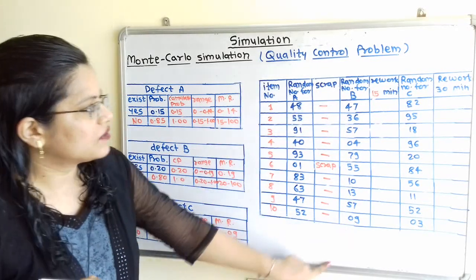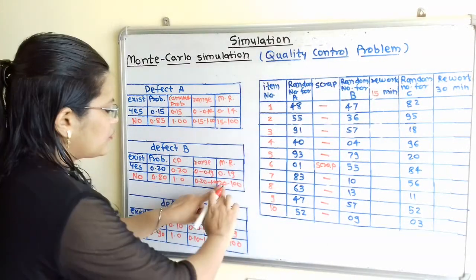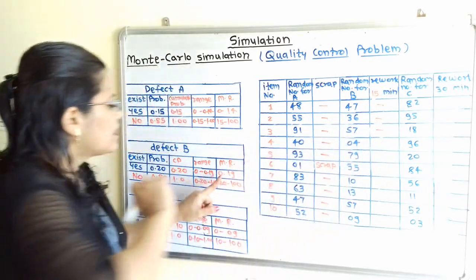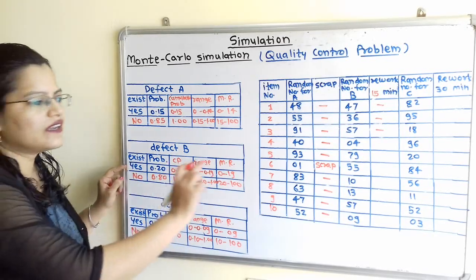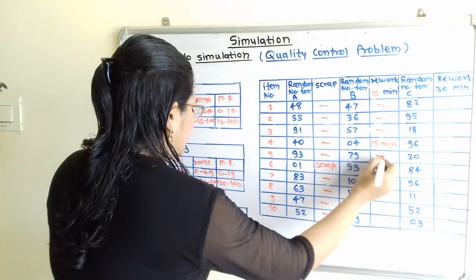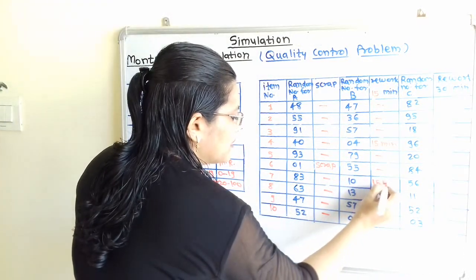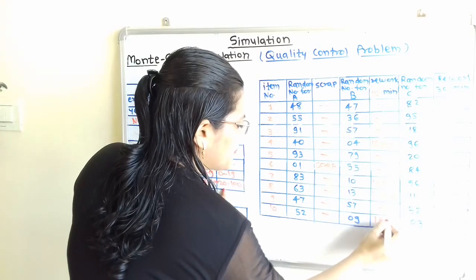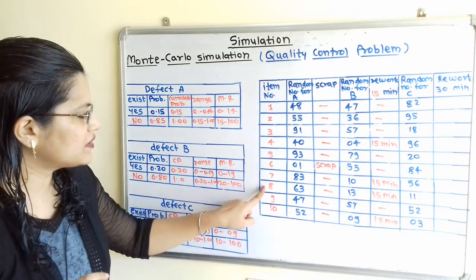Now we move to the random numbers for defect B. Random number 47 fits in the second row — no defect. 36, no defect. 57, no defect. Then 04 fits in the range 0 to 19, so defect B occurs and there is rework for 15 minutes. 79, no defect. 55, no defect. Then 10 also fits in 0 to 19 — rework for 15 minutes. 13 — rework for 15 minutes. 57, no defect. 09 — rework for 15 minutes. So defect B occurs in item numbers 4, 7, 8, and 10.